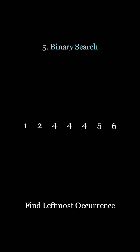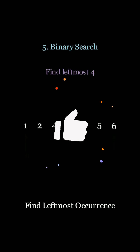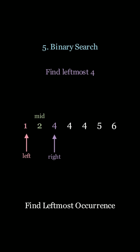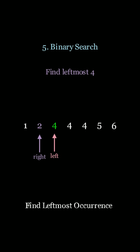However, what if we want to find the leftmost occurrence of a number that's duplicated — in this case, 4? We have to be clever with how we compare the left, right, and mid values, such that we converge to an answer at the end of the algorithm, once again in log n time.